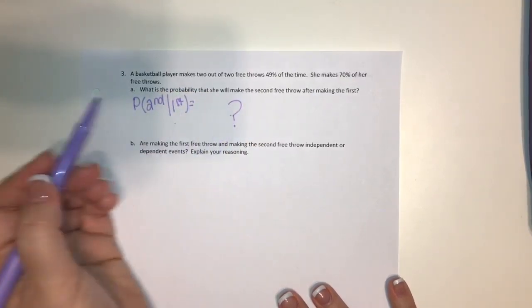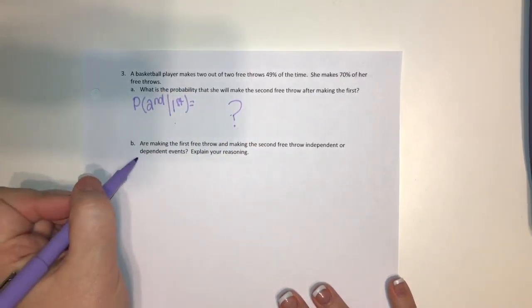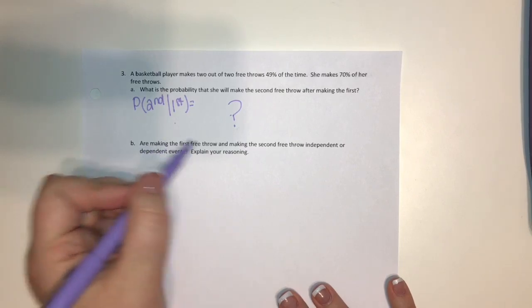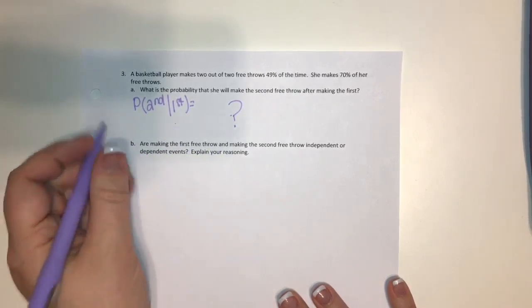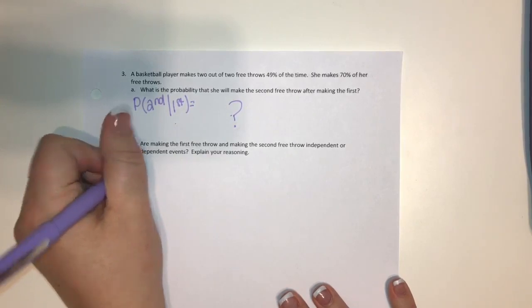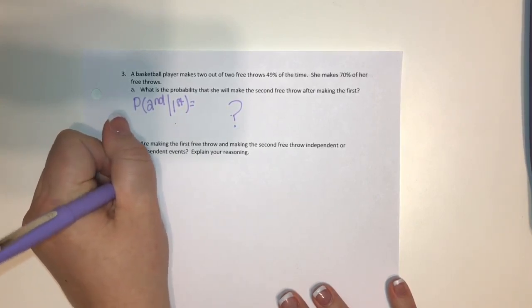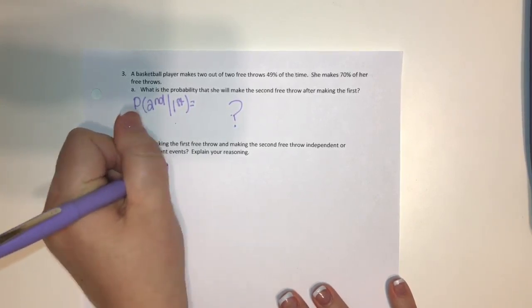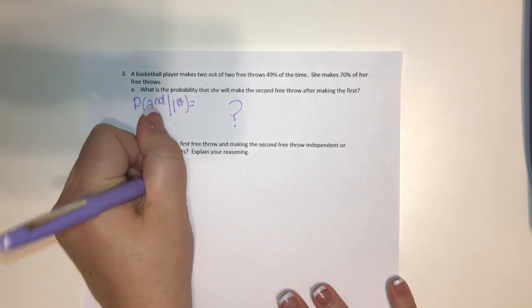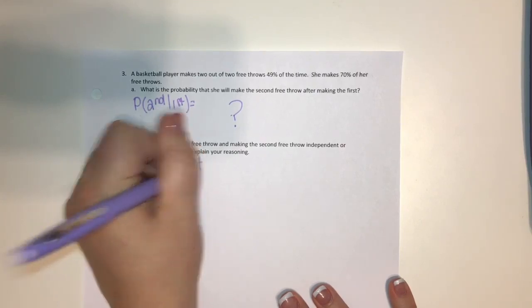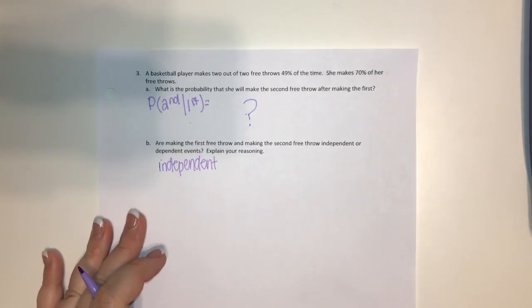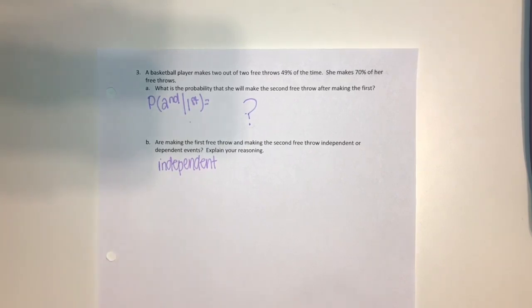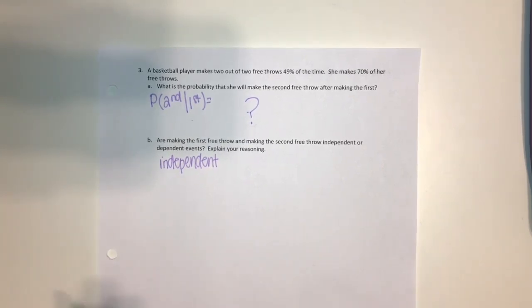Let's look at part B. Are making the first free throw and making the second free throw independent or dependent events? I would definitely say those are independent. It does not matter if we make the first free throw — that does not change our probability of making the second free throw.